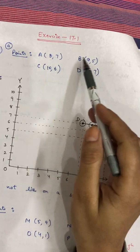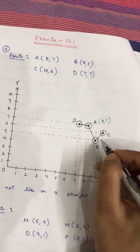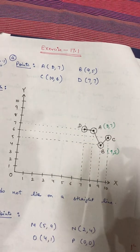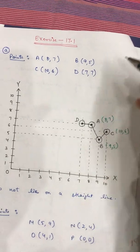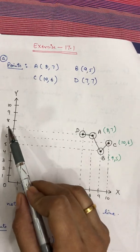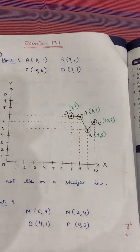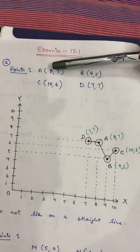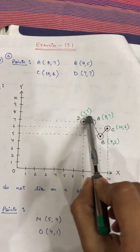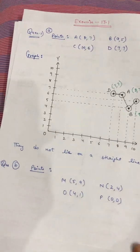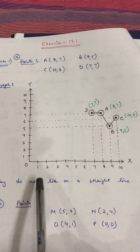Next, B is (9, 5) — 9 on the x-axis and 5 on the y-axis, they meet at point B. C is (10, 6) — 10 on x and 6 on y. D is (7, 7) — 7 on x and 7 on y. After plotting, the first digit is always for the x-axis and the second for the y-axis. After joining these points you can see there is a zigzag line, so you can write: they do not lie on a straight line.